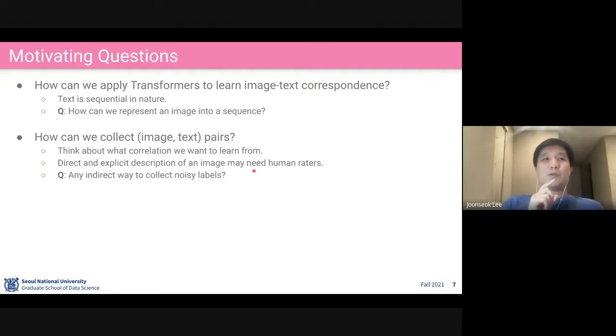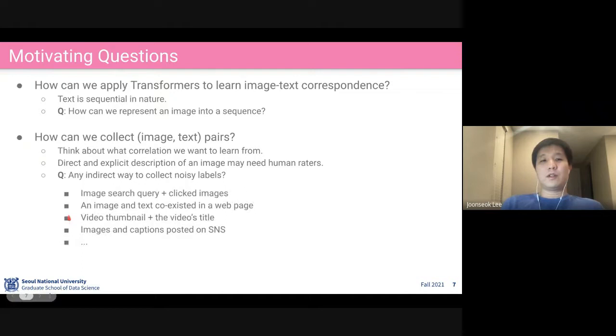Direct and explicit description of an image may need human raters. One exhaustive way is asking human raters to describe an image. But that's not cost effective, right?